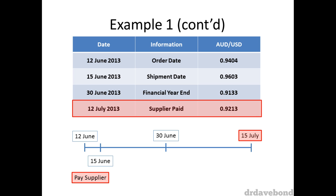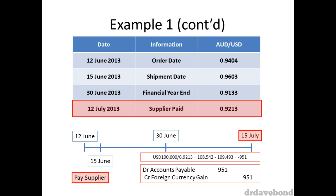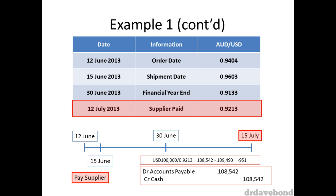The supplier is paid USD 100,000 on the 12th of July, which equates to AUD 108,542, using the spot rate for that day. As the Aussie dollar has strengthened slightly from 0.9133 to 0.9213, Company A can recognise a small gain of AUD 951, and then it records the payment to the supplier. If you want, you can combine these two entries.